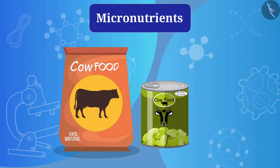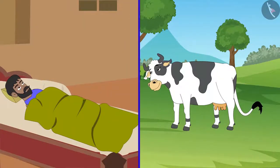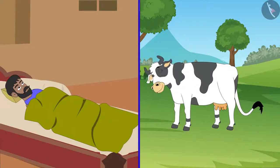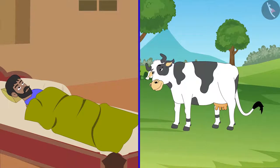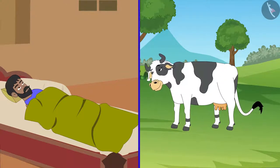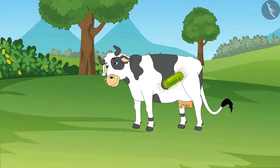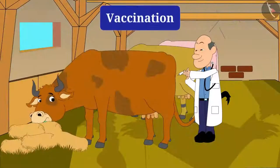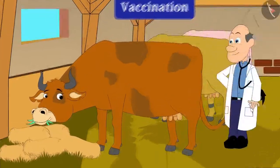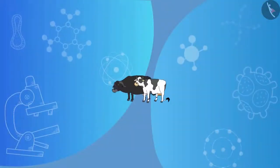Just as humans get sick, animals also get sick. To protect animals from different kinds of diseases, animals are vaccinated against viral and bacterial infections. That was all about cattle farming.